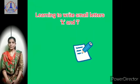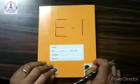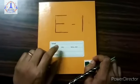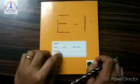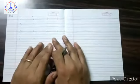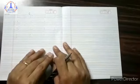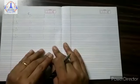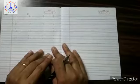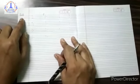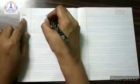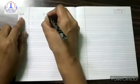Now children, teacher will show you how to write small letter K and small letter L. Children, you have to take your E1 book, pencil, and eraser. You have to keep your pencil and eraser ready. Now children, you all have written till J. You all learned how to write small letter J. Teacher will now teach you how to write small letter K and small letter L. First, you have to write the date. Then, you have to write C dot W.